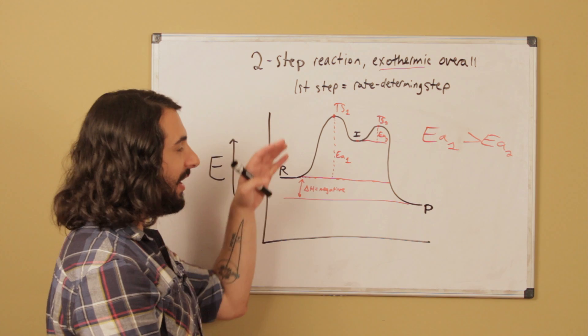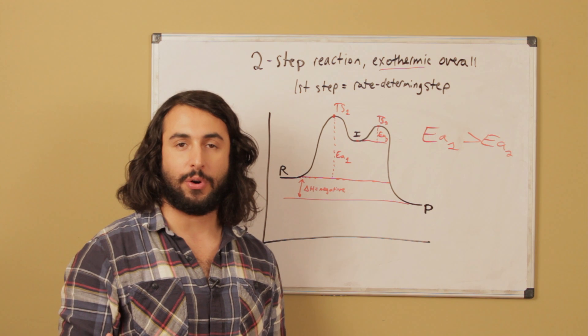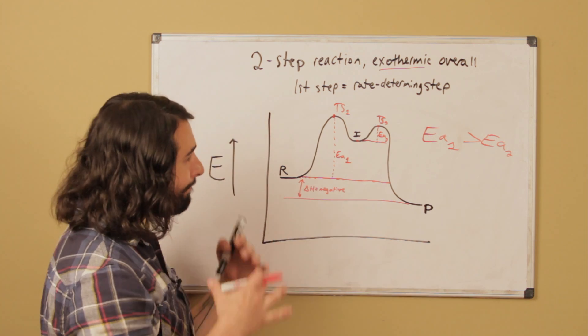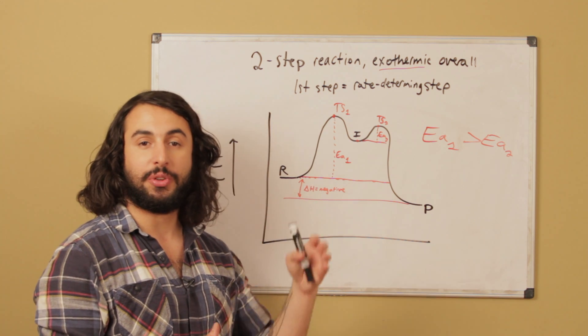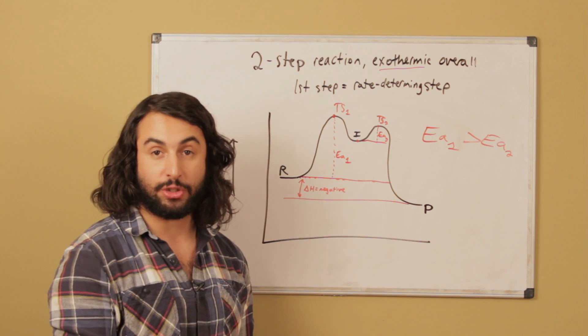The larger the activation energy, the slower it's going to go, because it will take longer for enough collisions to occur for all the molecules to react. On the macroscopic scale, what that means is that the reaction with the largest activation energy is going to be the slowest step and therefore the rate-determining step.